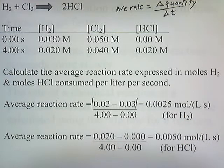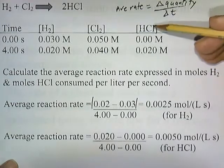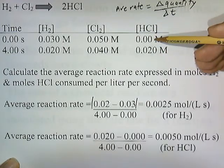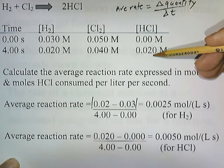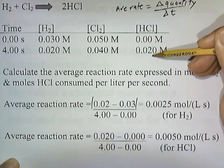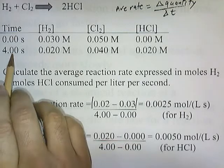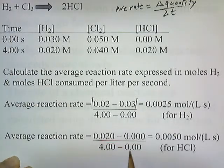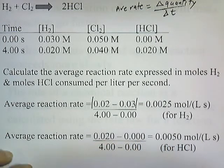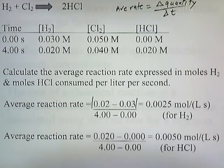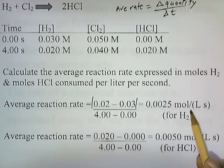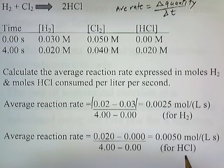That's the rate at which H₂ disappears. Now let's figure out the average rate at which HCl appears. At the start there's no HCl, but four seconds later there's 0.02 molar of HCl. So it's going to be 0.02 minus 0, divided by 4 minus 0. Solving that fraction, you get 0.0050 moles per liter per second for HCl. So H₂ disappears at an average rate of 0.025 moles per liter per second, and HCl appears at a rate of 0.0050 moles per liter per second.